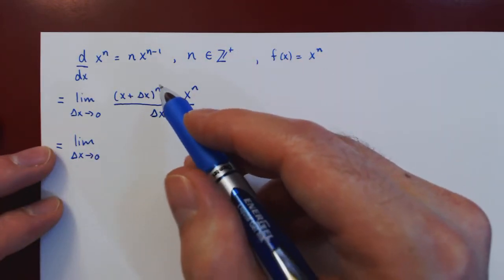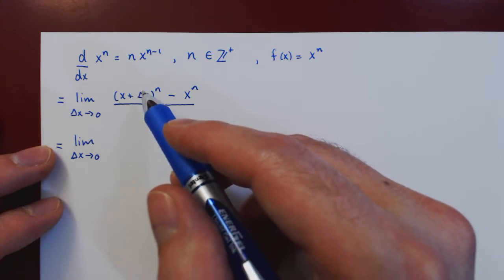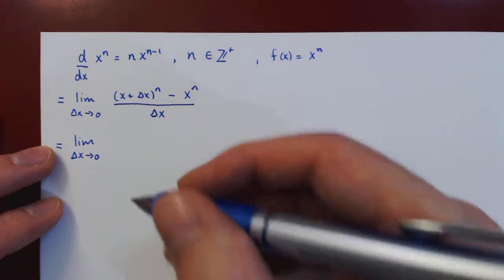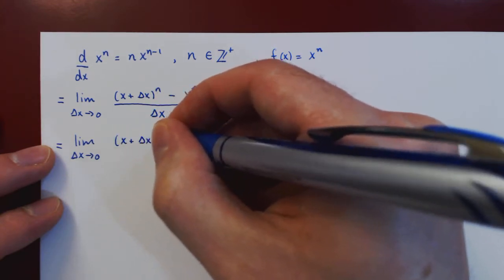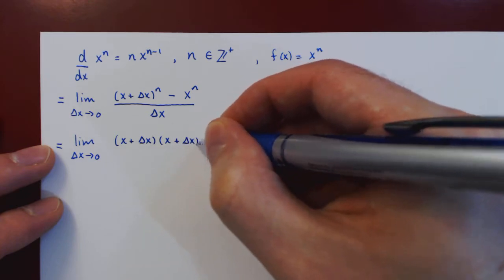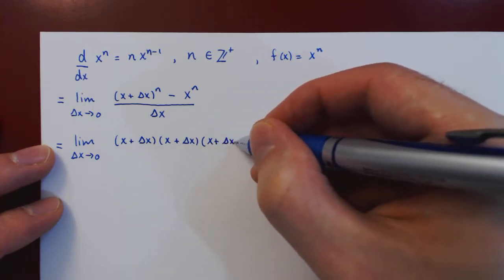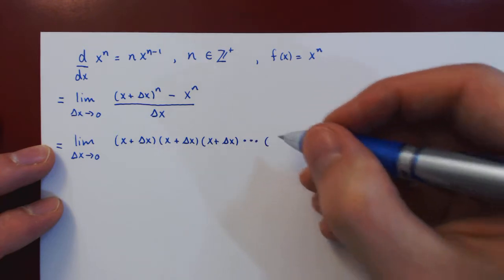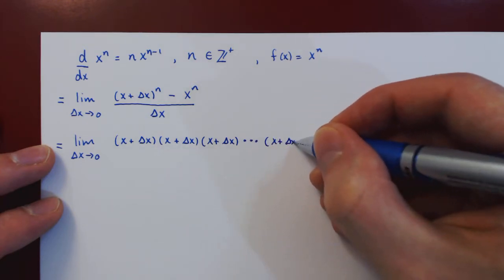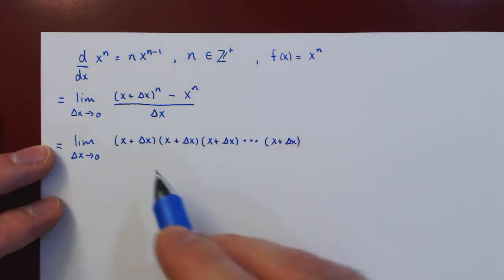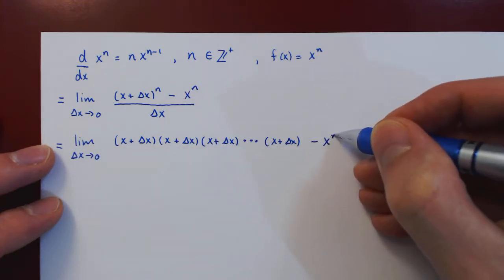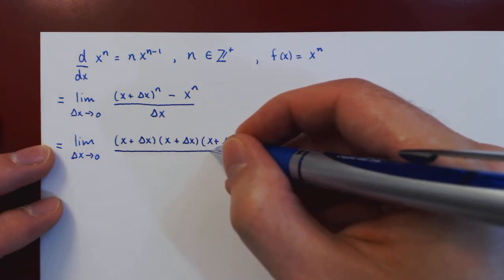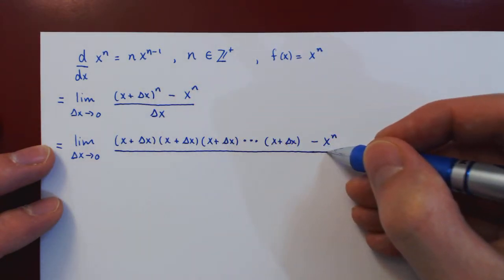Now since n is a positive integer, here we are simply multiplying x plus delta x with itself n times. So we can write this out long: x plus delta x times x plus delta x, dot dot dot, and finally the nth term x plus delta x. And again we have to emphasize that we have exactly n terms x plus delta x multiplied together, then of course minus x to the n, and all divided by the change in x delta x.